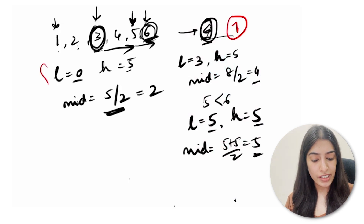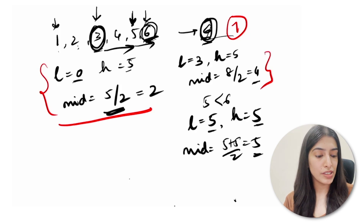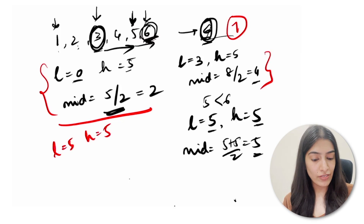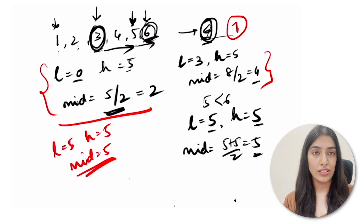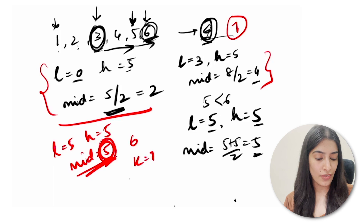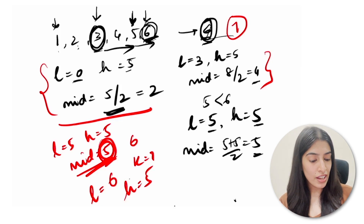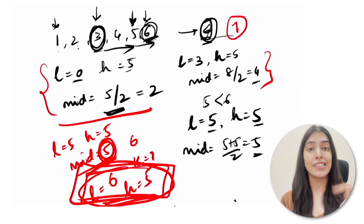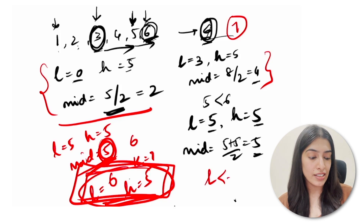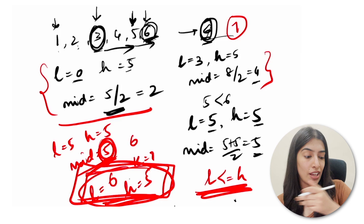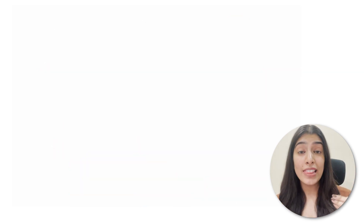Now suppose we search for 7 instead of 6. The first two iterations are the same. In the third iteration, l=5, h=5, mid=5, array[mid]=6. Since 6 is not equal to 7 and 6 < 7, we move l to mid+1 = 6. Now l=6 and h=5, so l > h — we exit the while loop. This is why the condition l ≤ h is critical; without it we'd get stuck in an infinite loop.